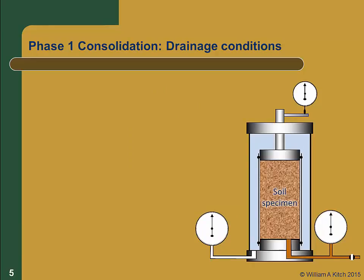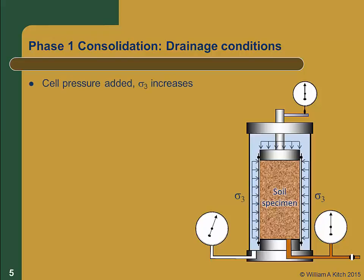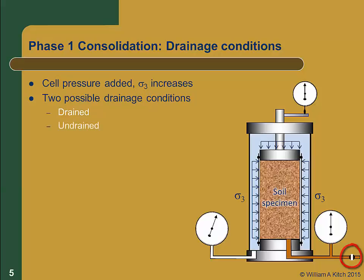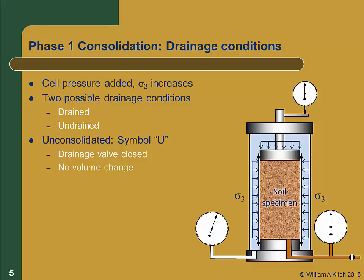There are several different types of triaxial tests, distinguished by the drainage conditions applied during the consolidation and shear phases. In phase 1, pressure is added to the water surrounding the specimen, providing a confining and consolidation stress. During consolidation, the drainage valve may either be open, allowing drainage, or closed, creating an undrained condition. If the valve is closed, we call the test unconsolidated and use the letter U. Since the specimen is saturated at the start, there can be no change in volume when the valve is closed, and excess pore pressures will be generated.